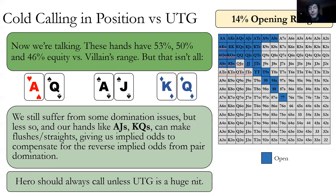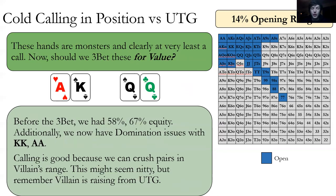When it says 'always call,' you could really consider a raise with a lot of these hands. If you think under the gun is not playing tight hands, then we might three-bet. If they're playing super tight, then we'll just flat call.